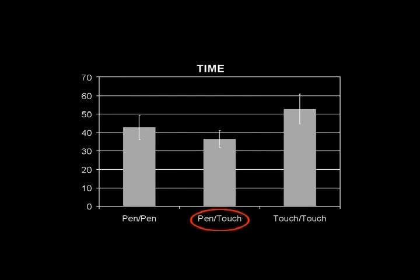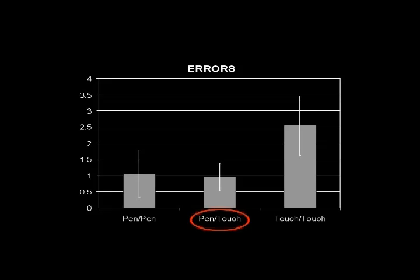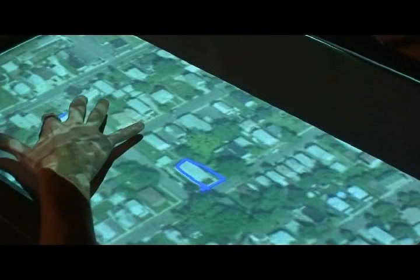In a formal experiment, our participants not only completed their representative tasks faster while using pen and touch input, but also committed fewer errors.